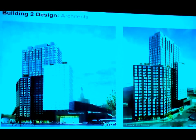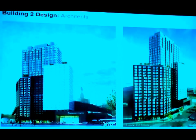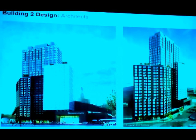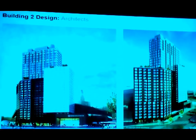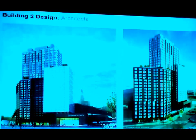The next thing we started looking at was how we could articulate each one of those volumes differently in terms of their facades, their envelopes, their skins. The way we did that was to start using different materials, different treatments to those materials, different colors. For example, in the white cube here, we're looking at a perforated metal mesh, anodized aluminum, with large windows set into that.